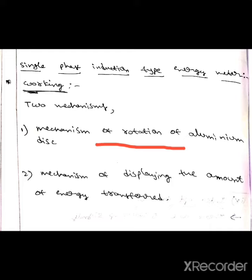A permanent magnet exerts an opposing force, then the disc starts rotating. This is the mechanism of rotation of aluminum disc. Now let's discuss the mechanism of displaying the amount of energy transferred.